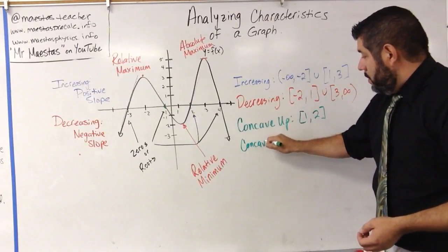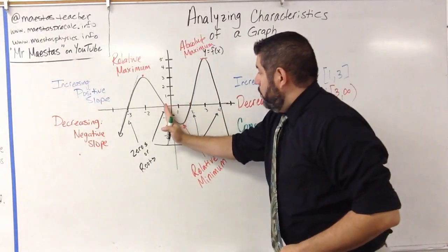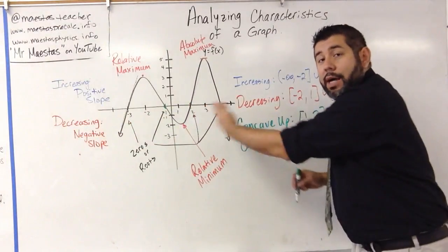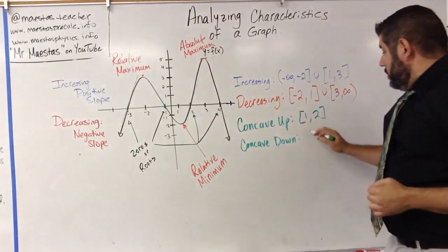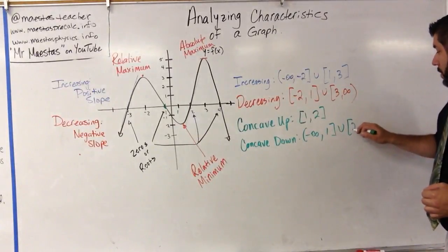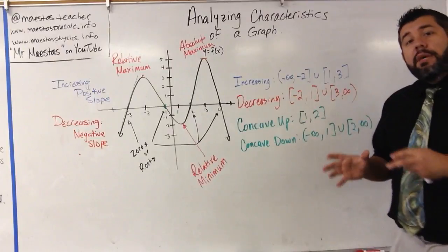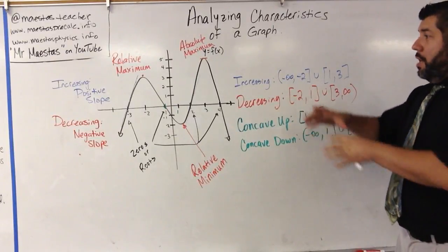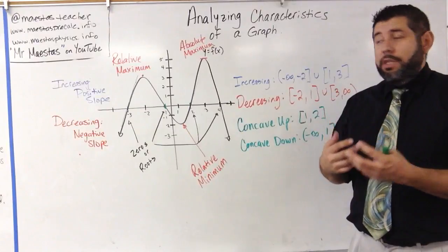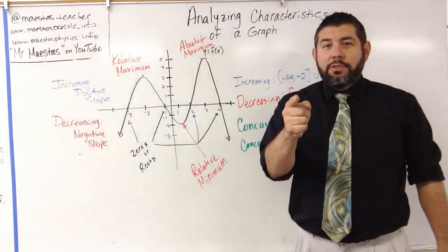Concave down would be where the graph goes down this way. From 1 to negative infinity, this is always going to be concave down, and from 2 to positive infinity this is always going to be concave down. So concave down is negative infinity to 1 and 2 to infinity. These are the major parts of a graph we need to understand: the vocabulary, where the slope is positive, where we have increasing and decreasing function, and where the concavity is concave up or concave down. That's it for this time — we'll see you soon. Bye.